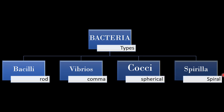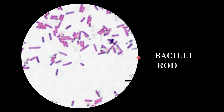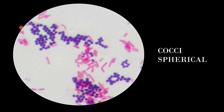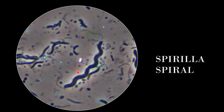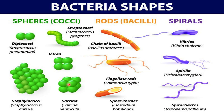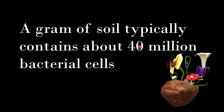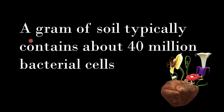Bacilli are rod-shaped, vibrios are comma-shaped, cocci are spherical, and spirilla are spiral-shaped. This simple chart shows the types: cocci, bacilli, spirilla, and vibrios. An interesting fact: a gram of soil typically contains about 40 million bacterial cells.